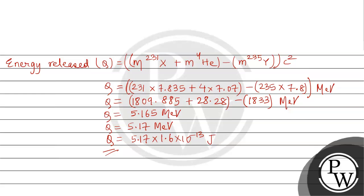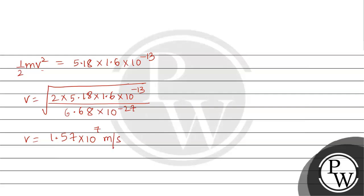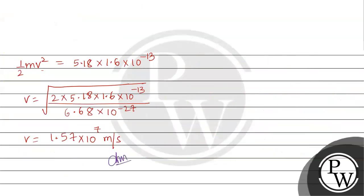Taking the approximate value, we have 5.18 × 1.6 × 10^-13 joules. Solving for velocity, the final answer for the speed of the emitted alpha particle is 1.57 × 10^7 meters per second.